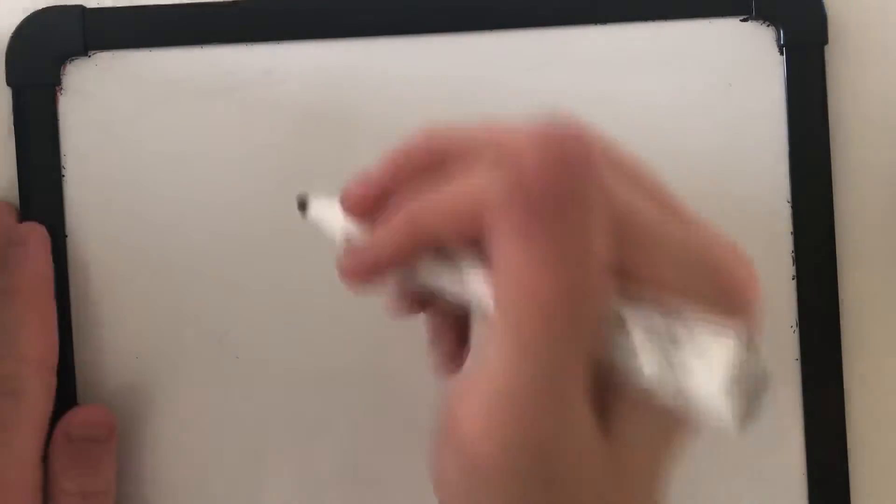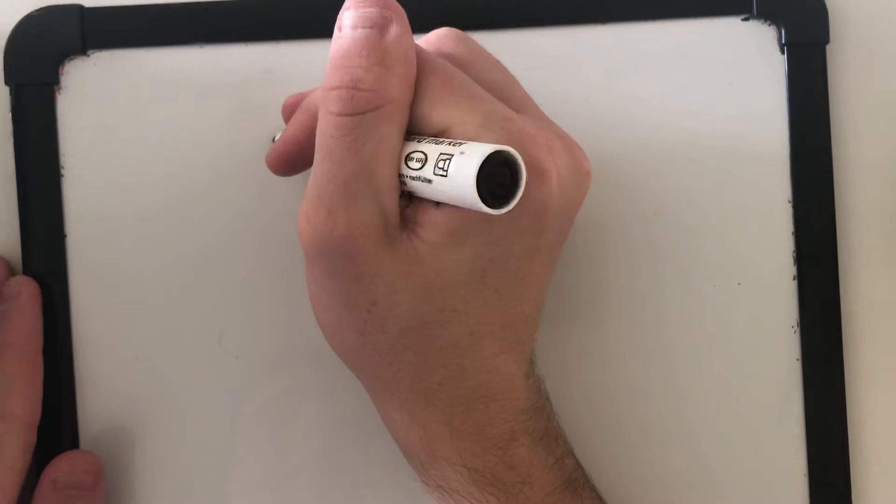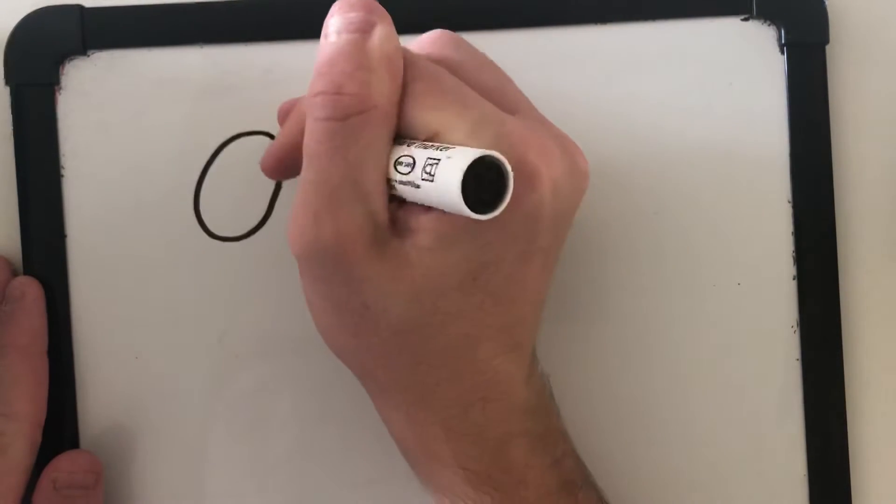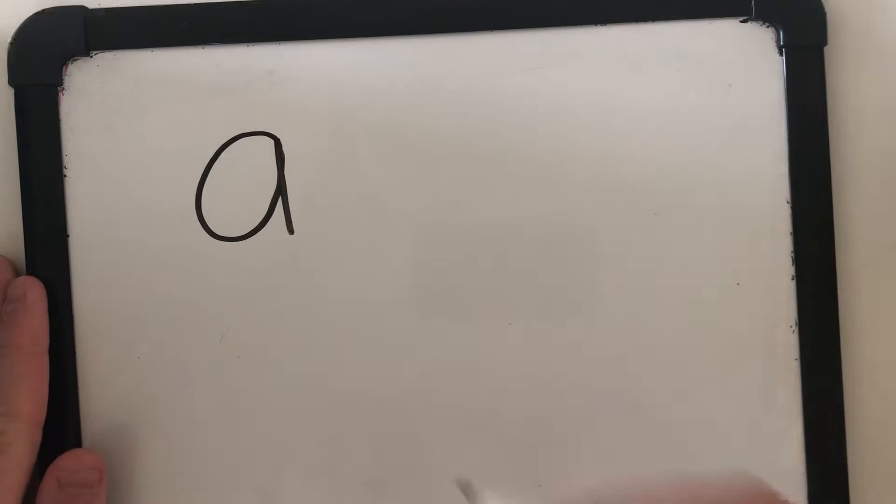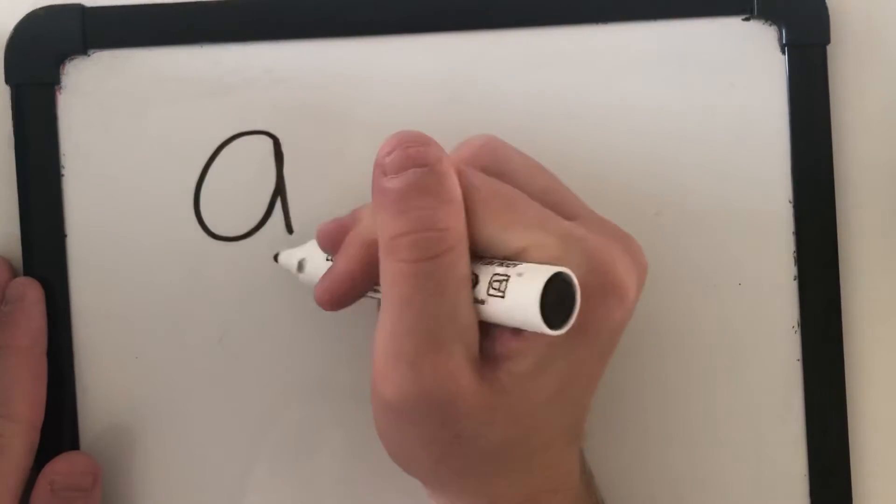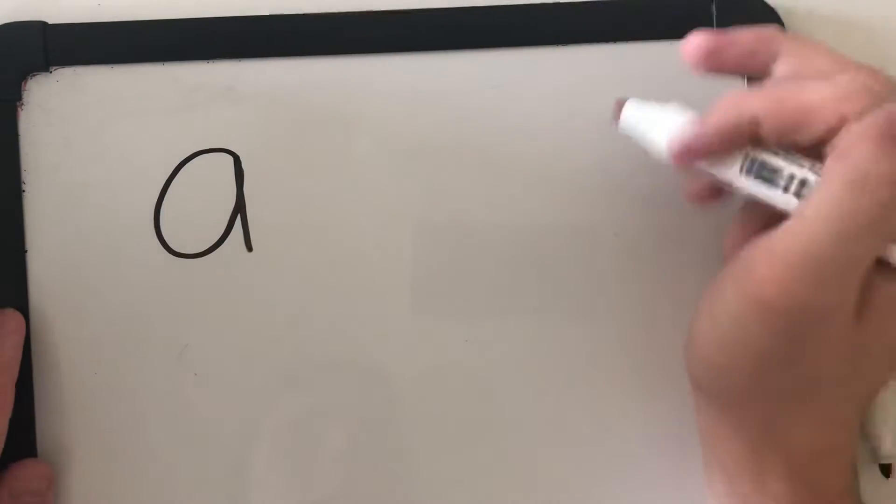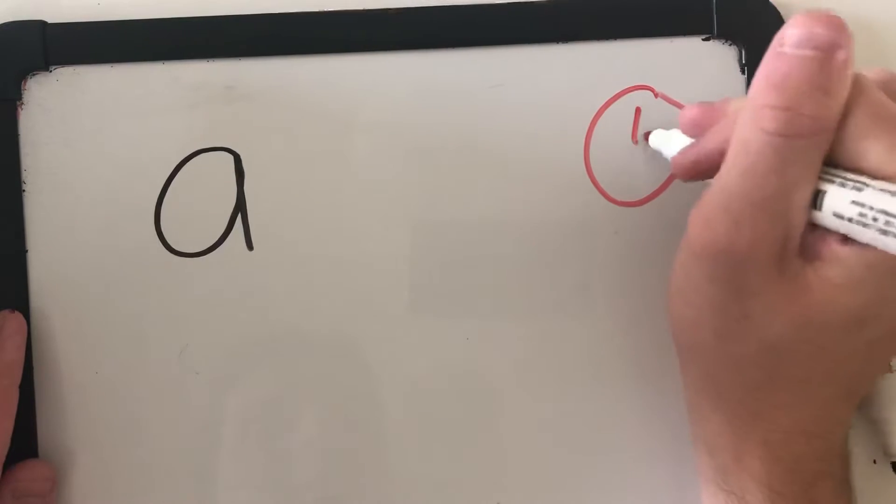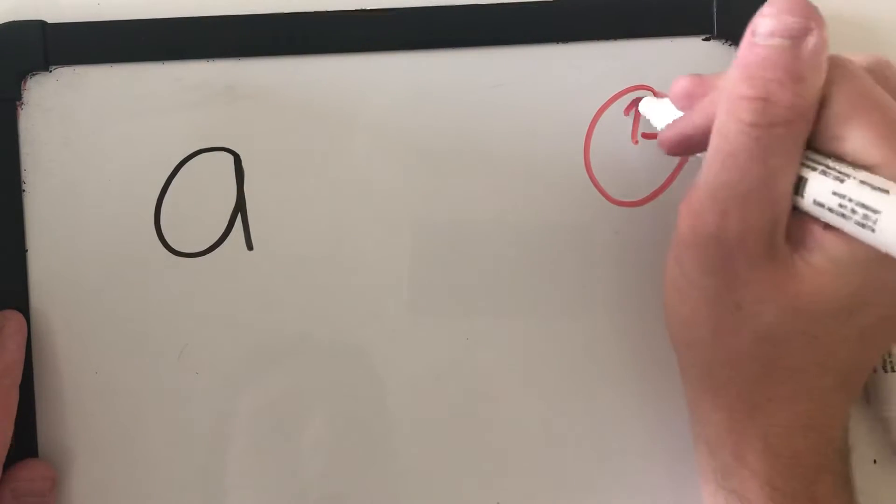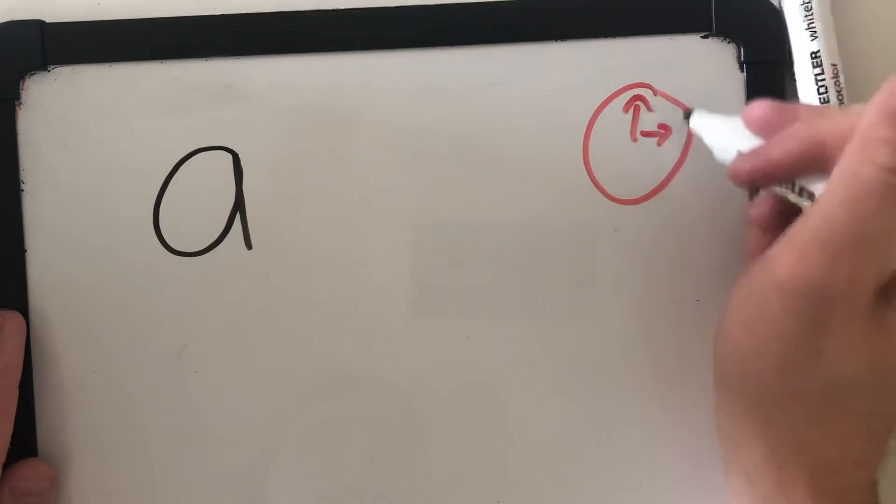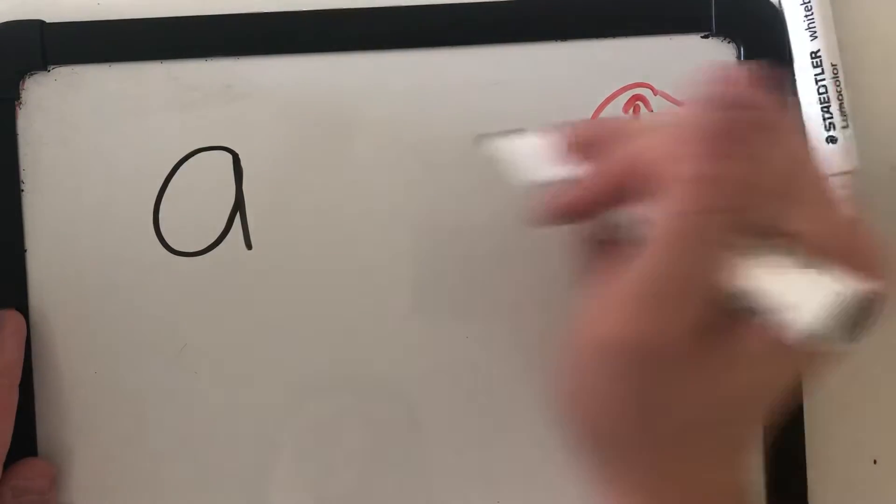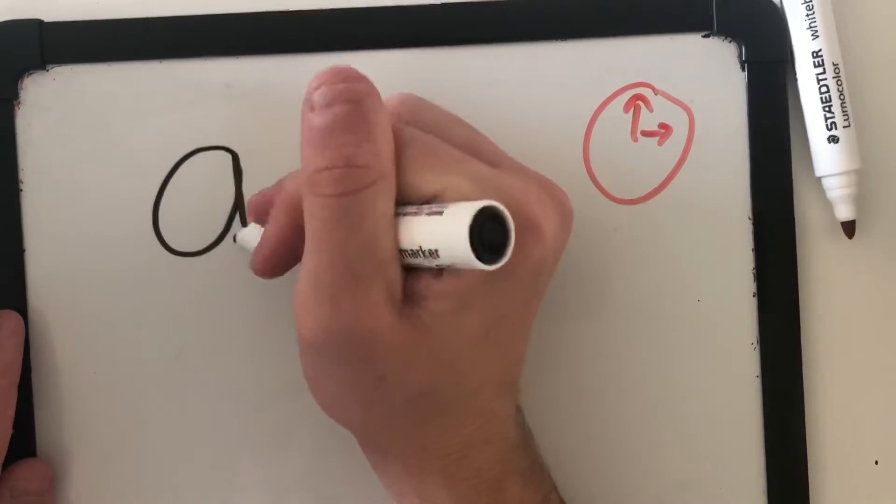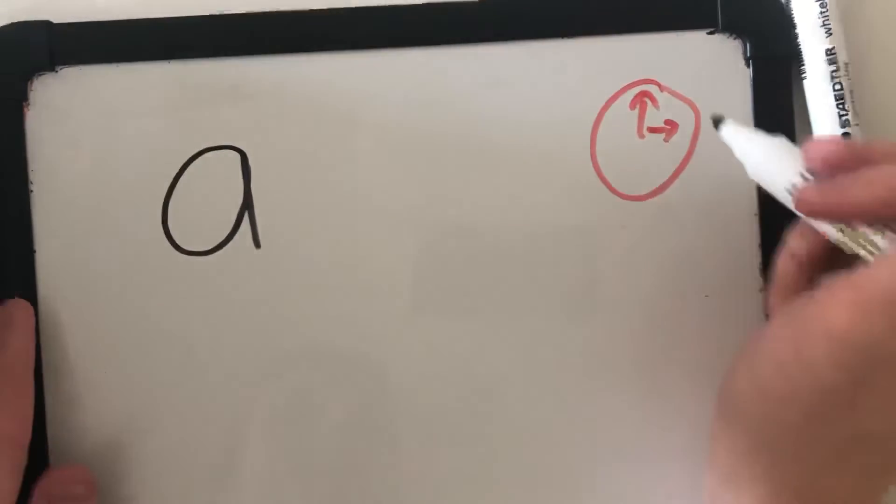For example, the letter A. If we start it here, it goes in this direction, anti-clockwise, the opposite direction of what our clock goes. If we just have it here, if our clock is supposed to go this way, our letter A goes the opposite direction. Another letter is the letter C.